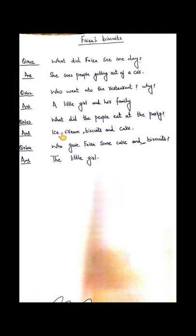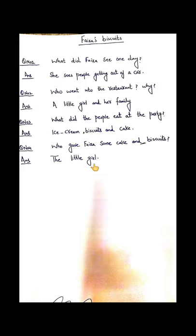Question number three is: what did the people eat at the party? The answer is ice cream, biscuits, and cake. The last question is: who gave Faiza some cake and biscuits? It was the little girl, so we will write: the little girl.